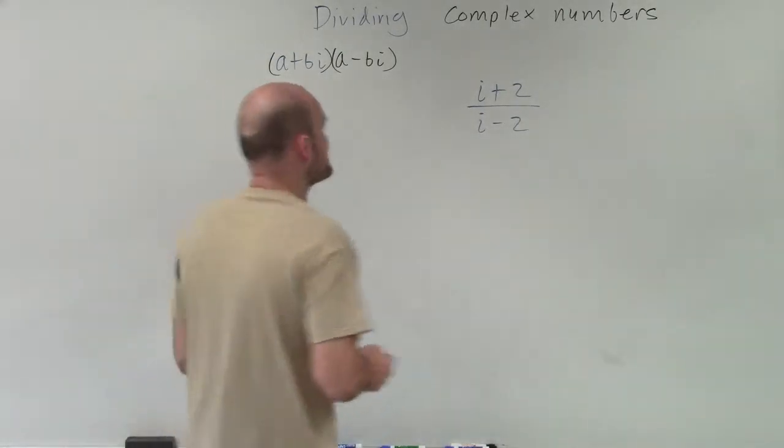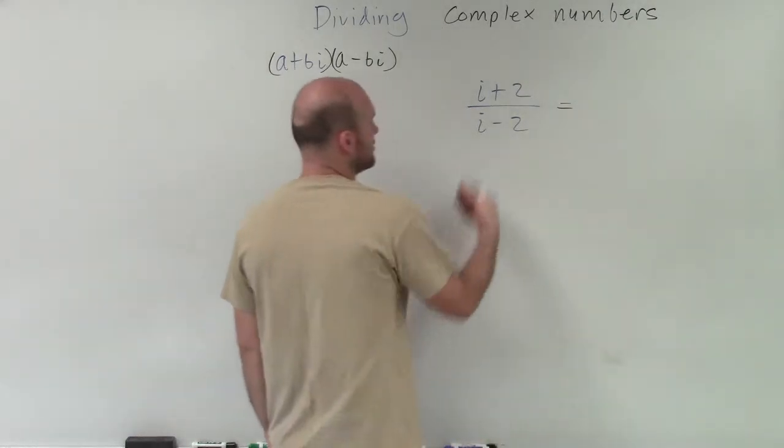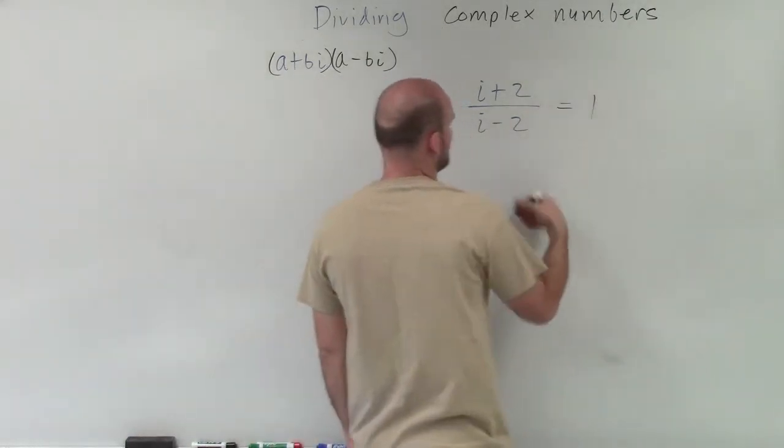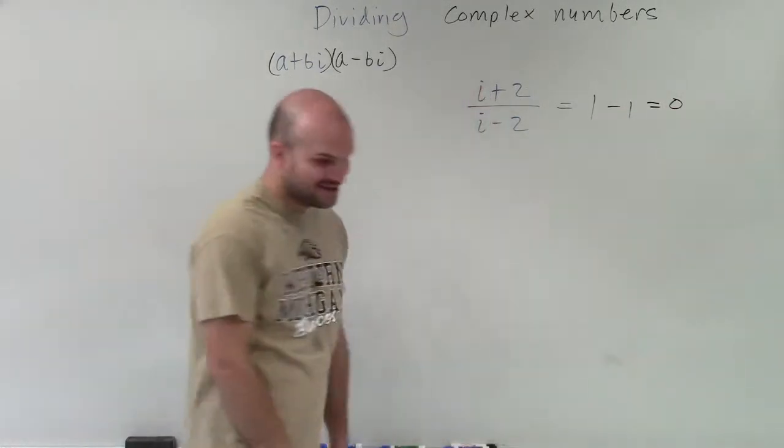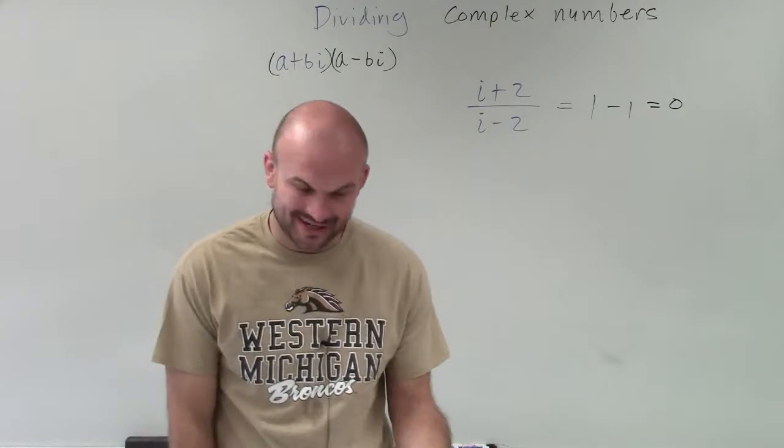And I'll get this mistake a lot of times. Students will say, well, the i's cancel out, so that leaves us with 1. And then 2 divided by negative 2, that leaves us with negative 1, which equals 0, which is a very appreciative answer.